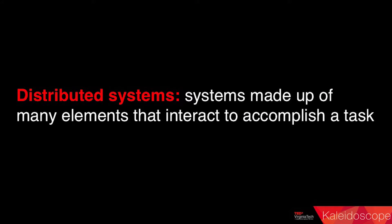I'm an engineer and I study distributed systems. Distributed systems are systems made up of many elements that interact to accomplish a task together. For example, if I have a problem, I can have one computer solve it, or I can have a lot of computers solve it all together — and if they work together, presumably they'll solve the problem faster.